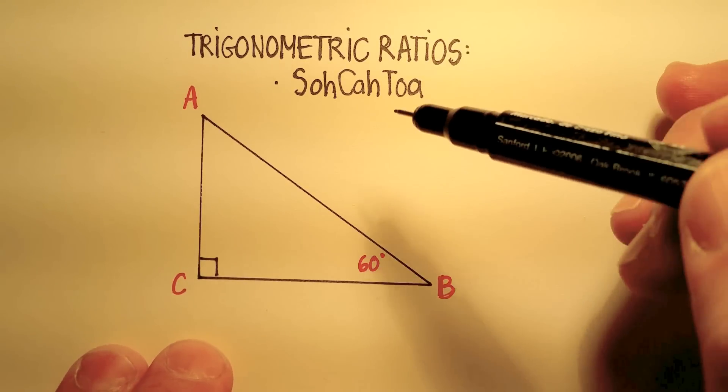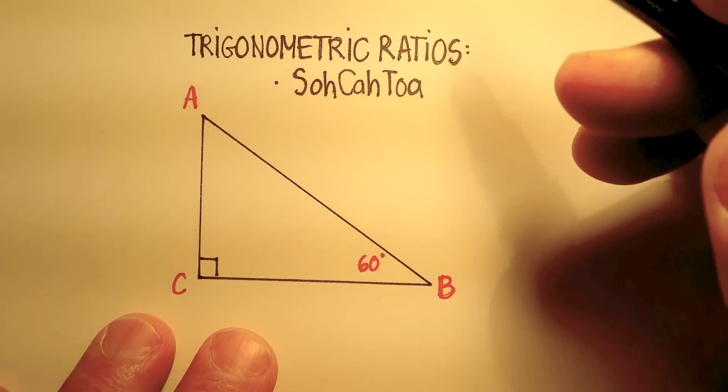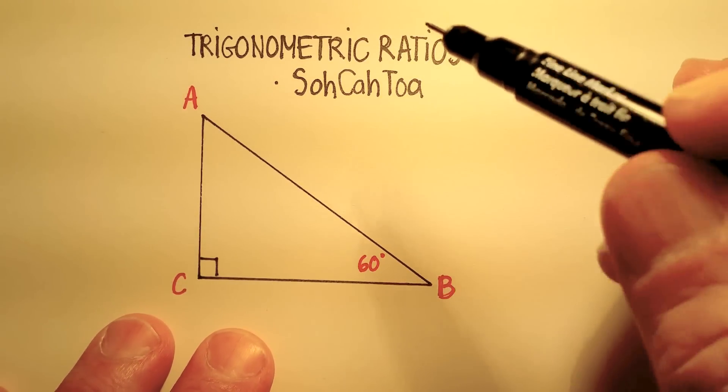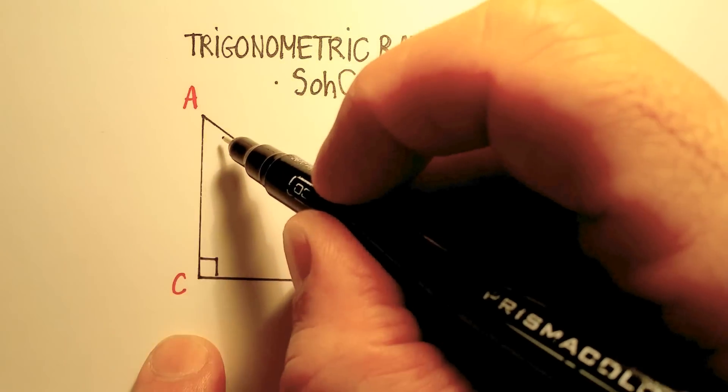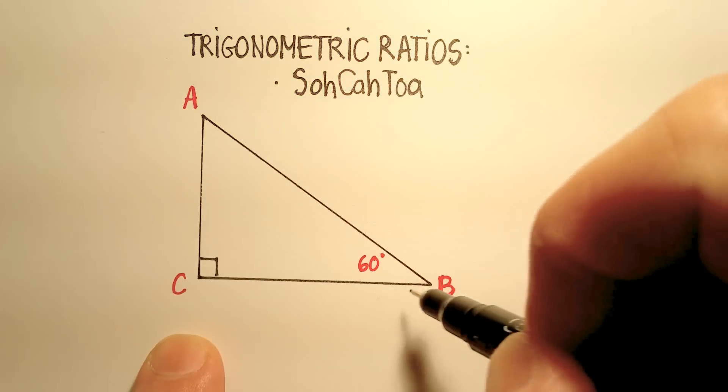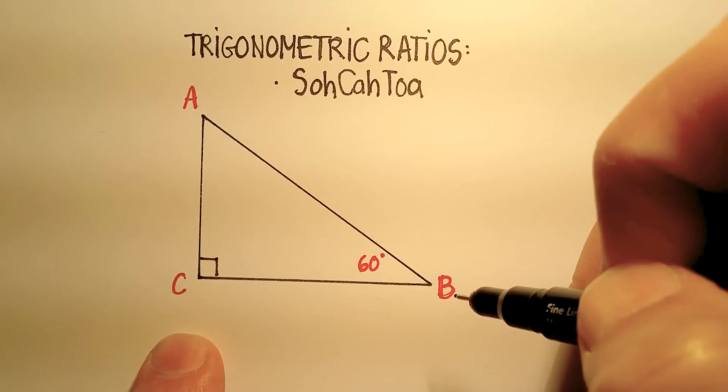The trigonometric ratios is an observation that the ancient mathematicians had, that there was a relationship between the angles and the sides of right triangles.